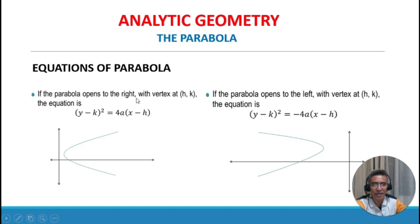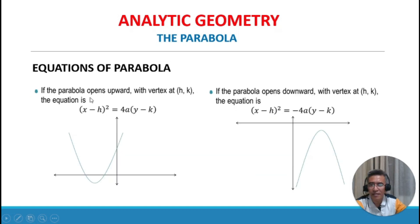For a parabola with vertex at (h, k): opening to the right gives (y minus k) squared equals 4a times (x minus h), where 4a is positive. Opening to the left gives (y minus k) squared equals negative 4a times (x minus h). Opening upward gives (x minus h) squared equals 4a times (y minus k). Opening downward gives (x minus h) squared equals negative 4a times (y minus k).